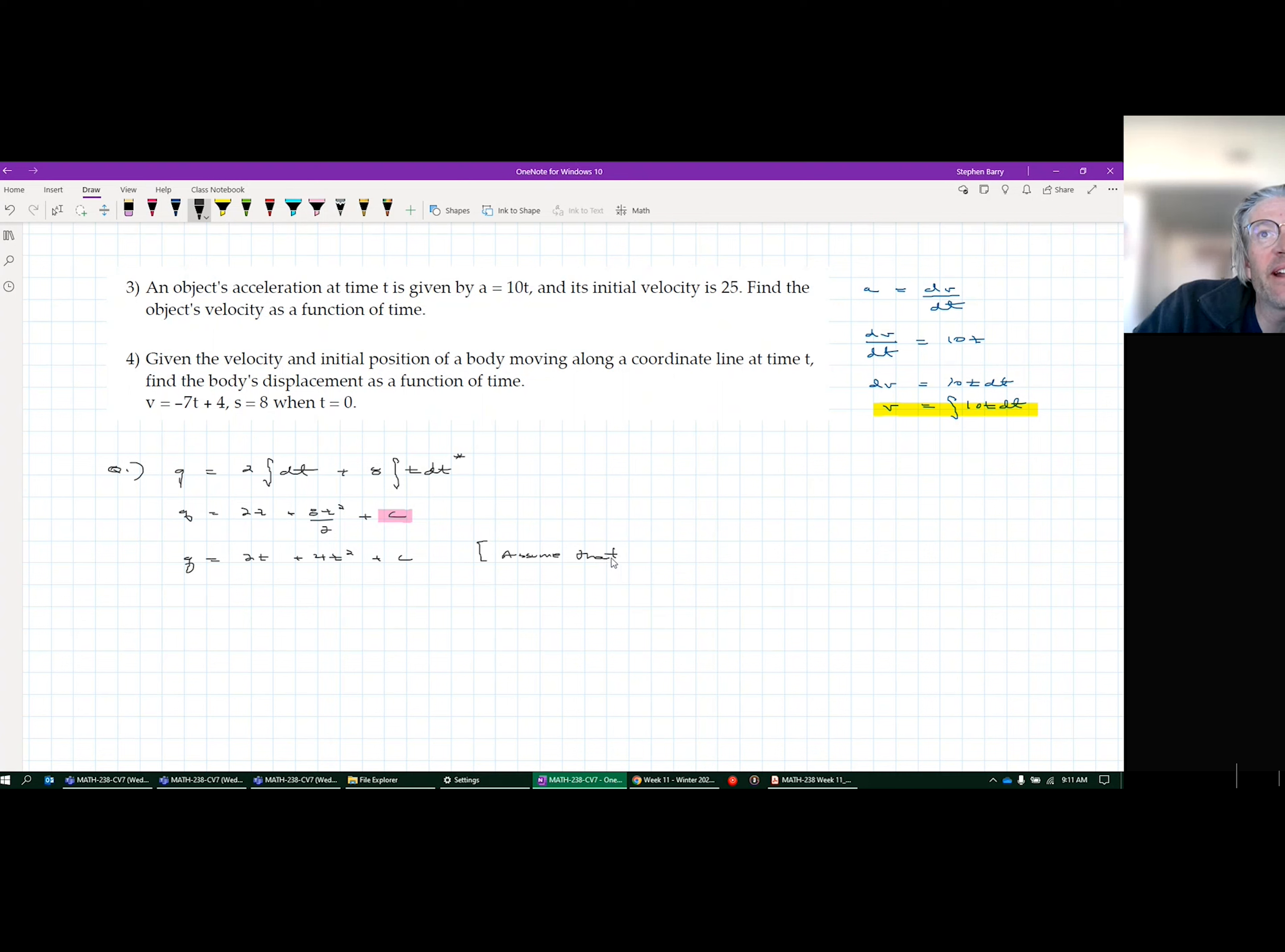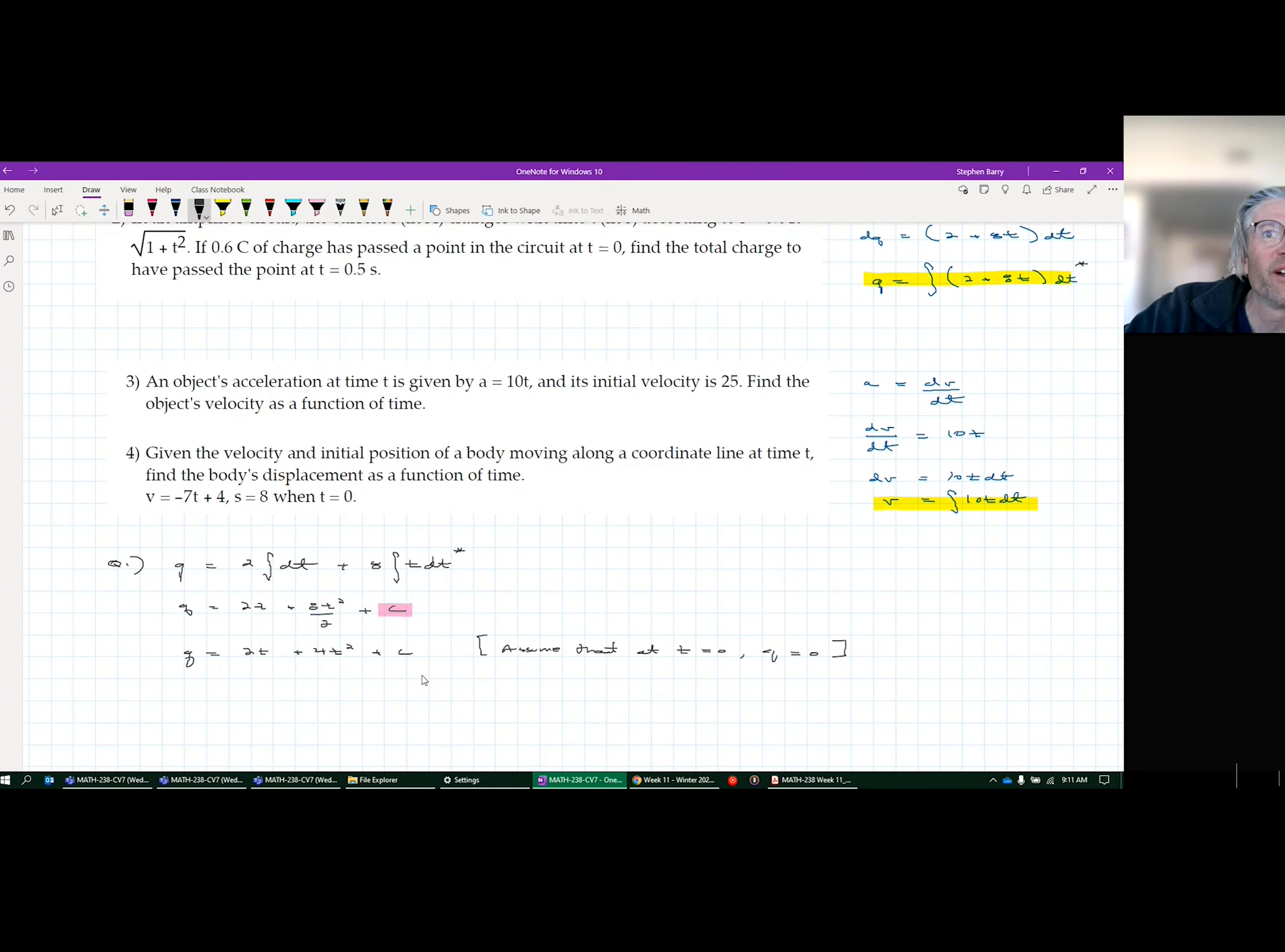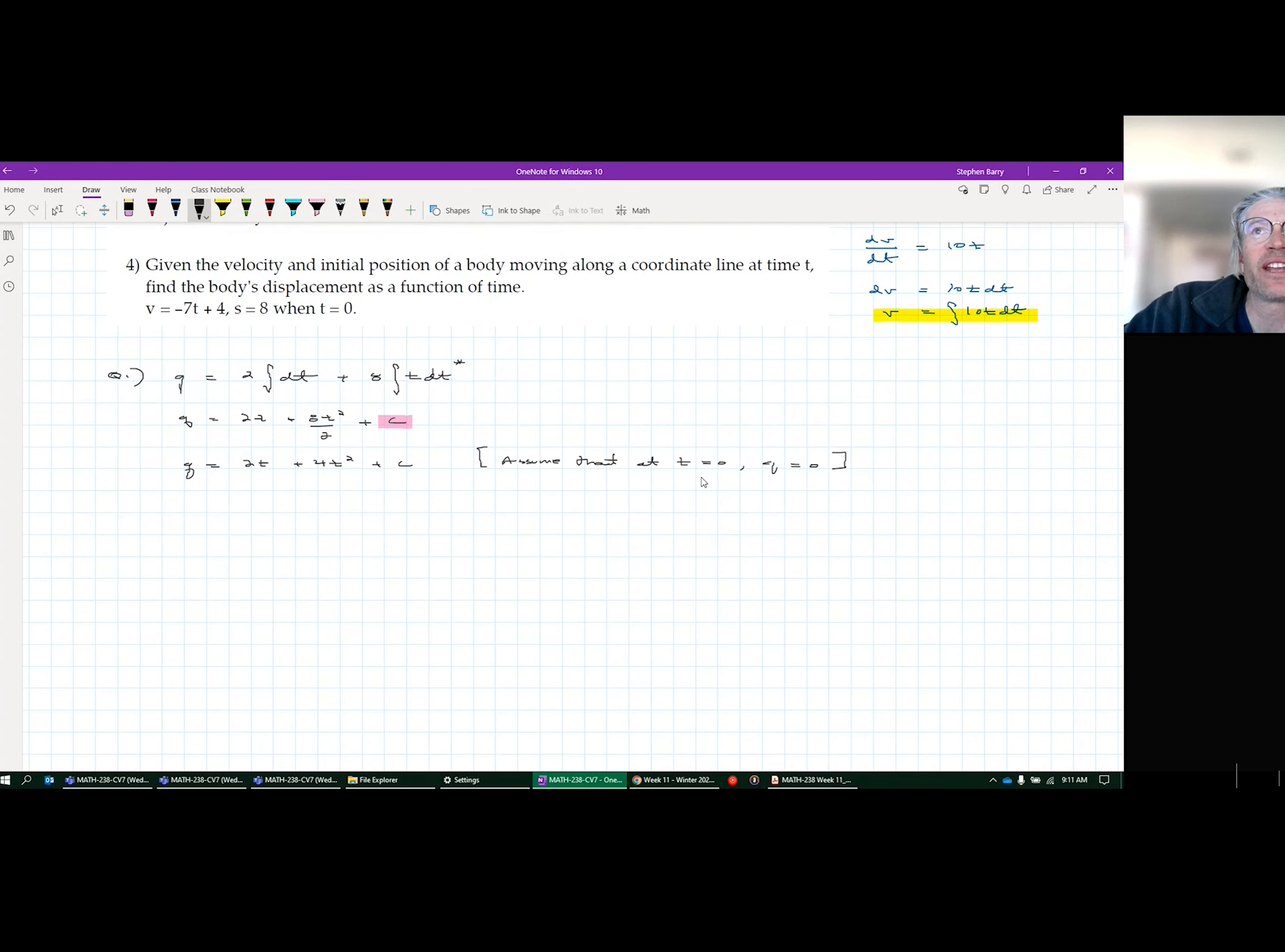But here we don't have any additional information. So we're going to do what makes sense at this point is assume there is no charge at time zero. Which is the logical assumption here. In question two, it's a little bizarre that they're telling you that 0.6 charge, 0.6 coulombs has passed at time zero. So in that case, you'd have to put in 0.6 where Q is and then time would be zero. But in this case, they don't give you any additional information. So I'm just going to say that at time zero, that makes sense that charge is zero. And in that case, C becomes zero. If everything here is zero, zero equals zero plus zero plus C, C is zero. Show that work.